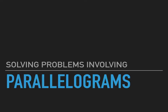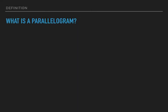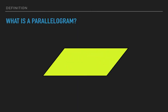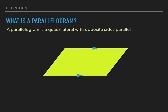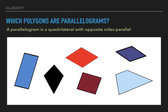Solving problems involving parallelograms. First, the definition of a parallelogram: it's a quadrilateral with opposite sides parallel. The notation we use to show that sides are parallel are these little arrows. So using just this definition, which of these polygons can be classified as parallelograms?